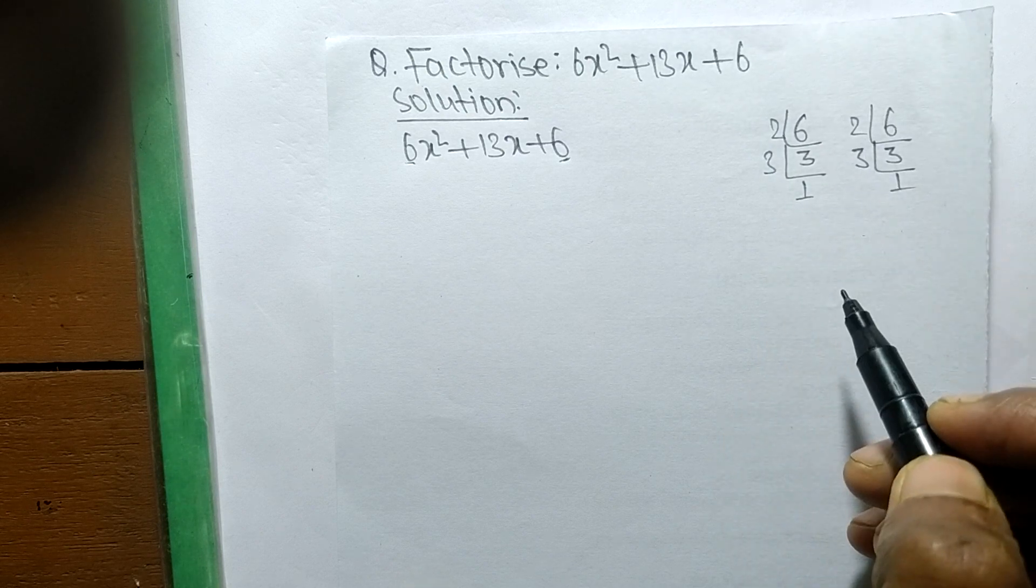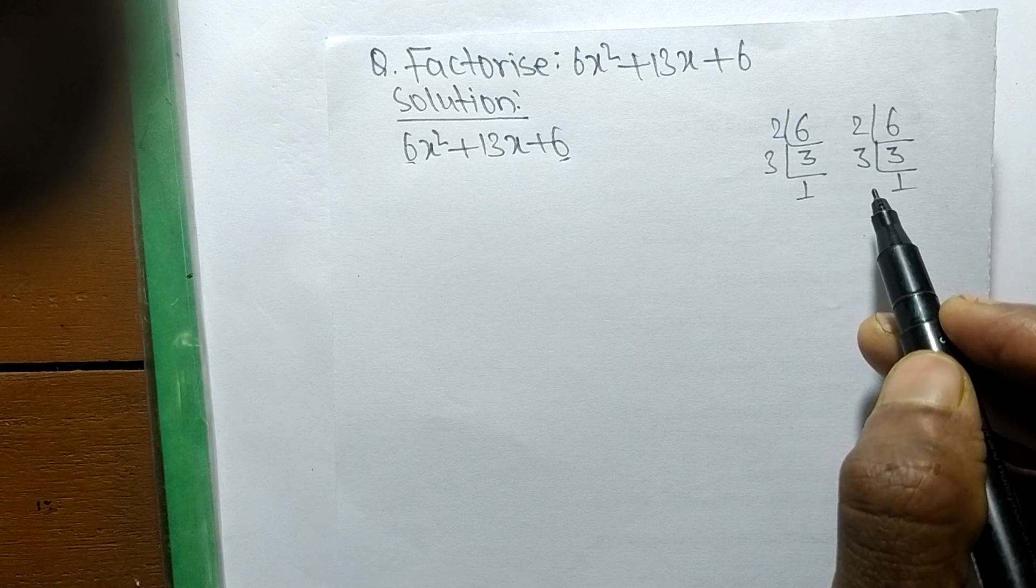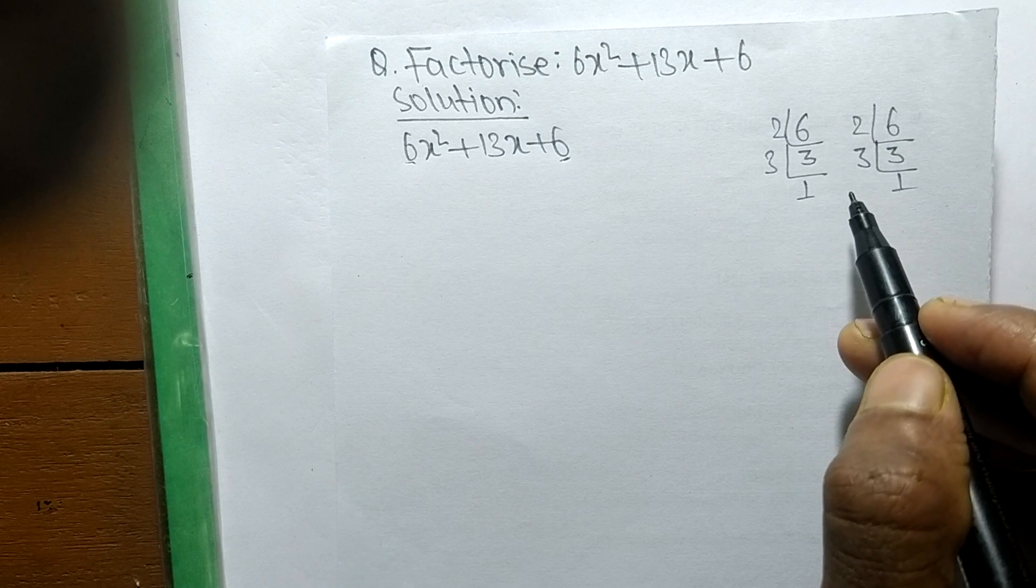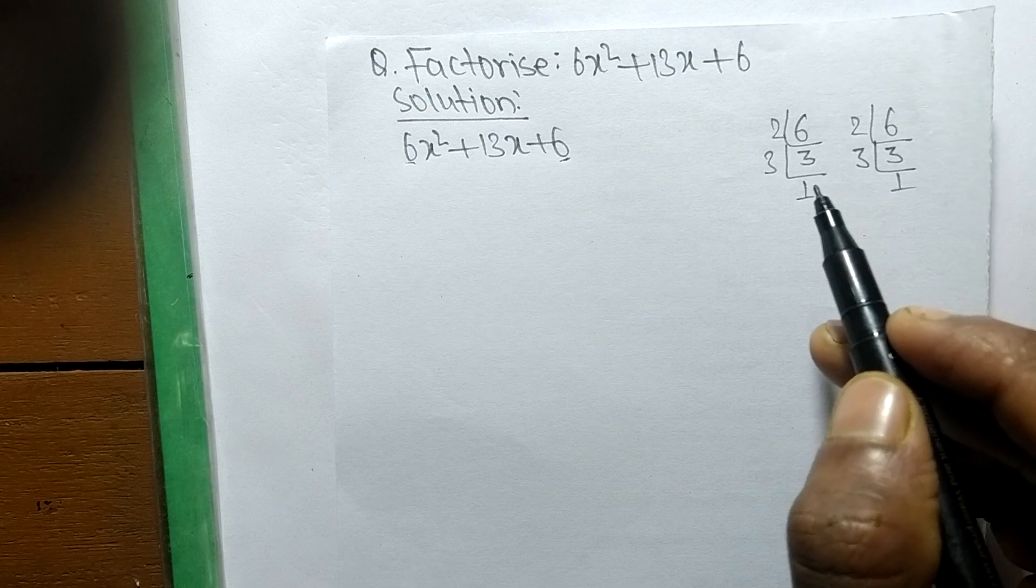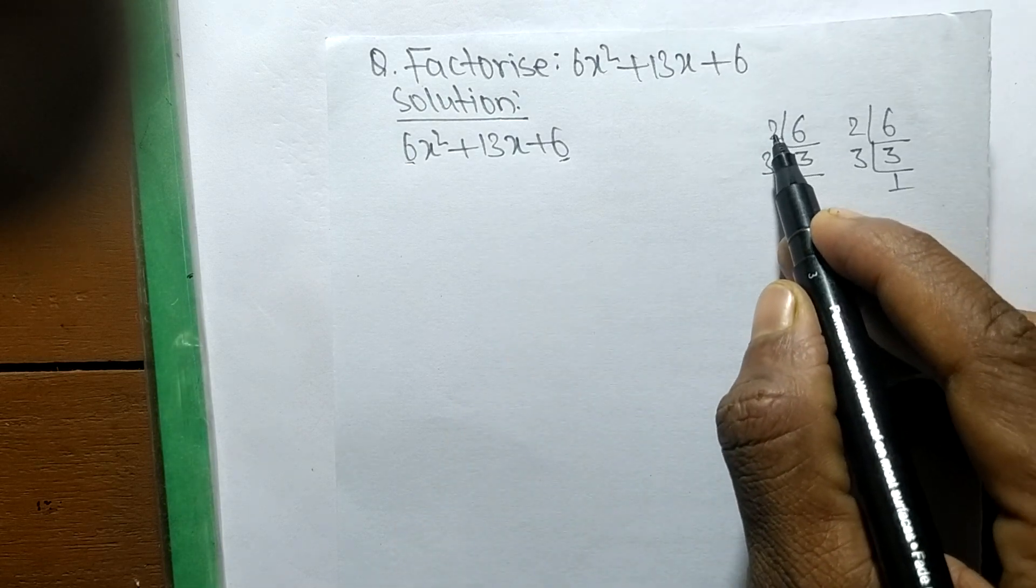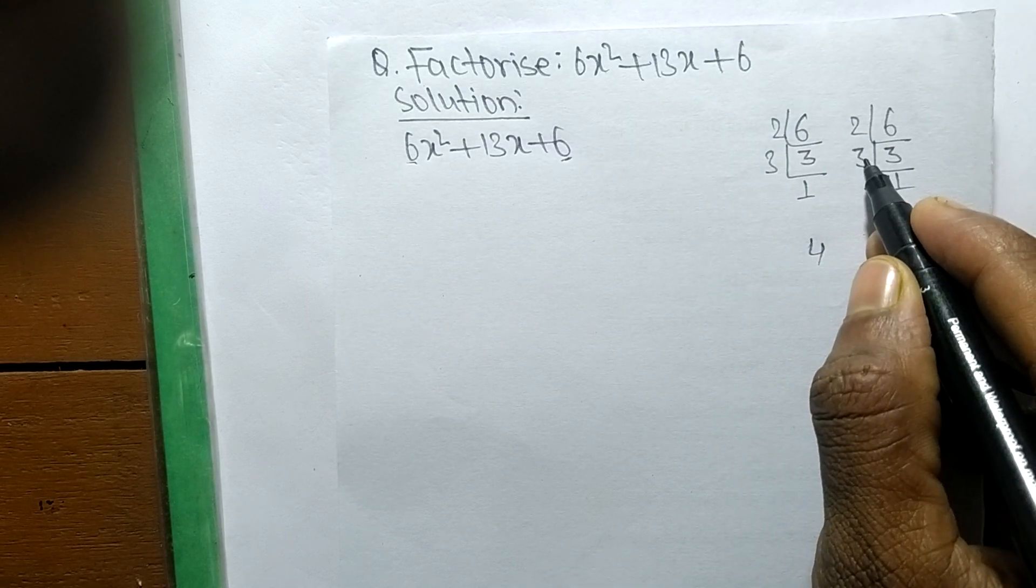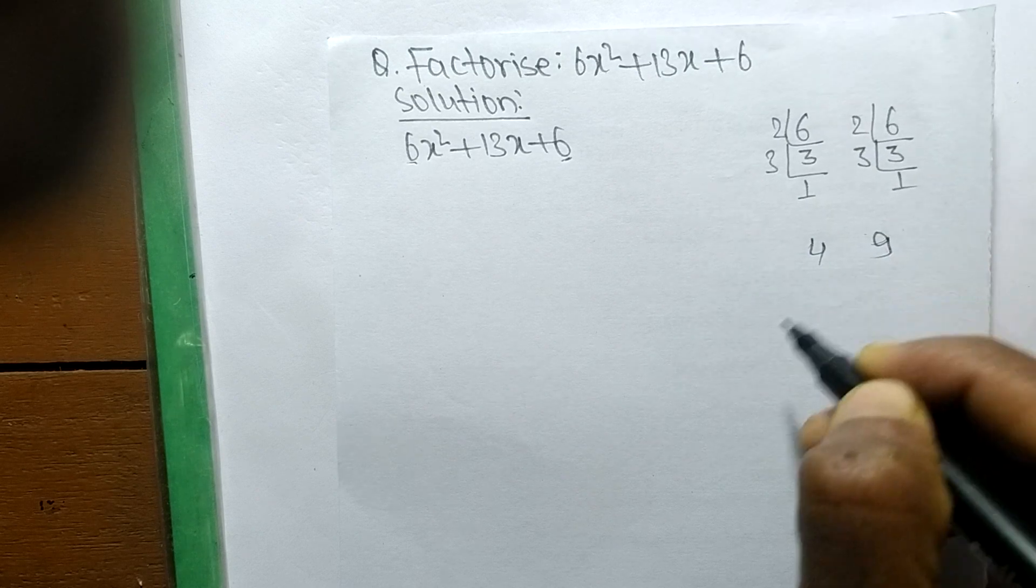By multiplying within these numbers we have to find such a number that by adding of which we have to take the result 13. So when you multiply first 2, then 2 times 2 means 4. Like as 3 times 3 means 9.